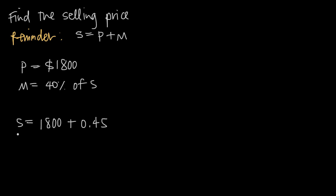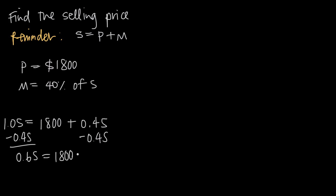Now if we want to solve for S, all we have to do is subtract point four S from both sides: minus zero point four S on each side. On the left hand side, we have one point zero S minus zero point four S, which gives us zero point six S is equal to eighteen hundred. The point four S terms on the right cancel and become zero, so we're left with that equation.